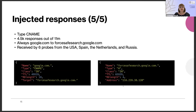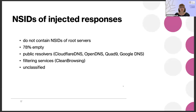Some probes received a series of CNAMEs pointing google.com to force-safe-search.google.com. When analyzing injected responses, we also extracted the NSID strings. Not surprisingly, none of those NSID strings belonged to DNS root servers, so it is not the root servers generating these responses. The great majority of NSID strings were empty, so we couldn't map them to originators. We also saw strings from filtering services, unclassified strings, and public resolvers.